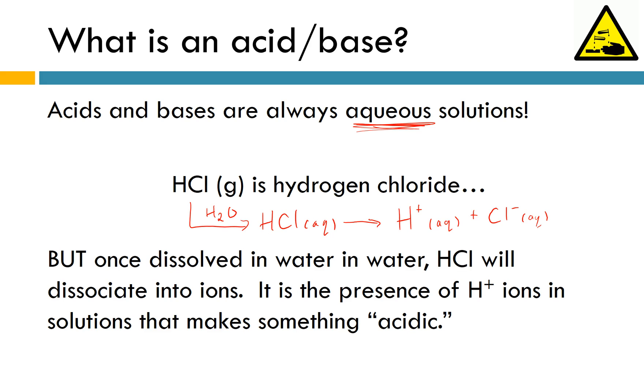So again, just as a pure substance, HCl is a gas and we call it hydrogen chloride. Once you take that HCl and you dissolve it in water, you will ionize it or break it apart, dissociate it, whatever you'd like to use to describe that process, and you're going to produce ions. More specifically, H+ and Cl-. Those H+ ions is what makes something an acid.